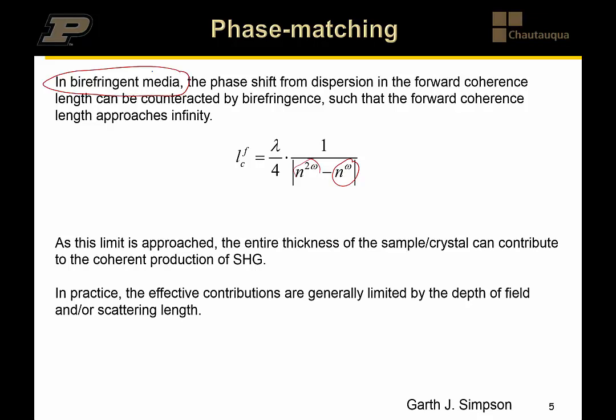So if you look along an optical axis it has a large refractive index for both 2 omega and omega and then compare that with another optical axis that has a smaller refractive index you might find a scenario where the fundamental at the high index axis is equal to the double refractive index on the low refractive index matched axis such that birefringence happens to be able to exactly counteract this dispersion effect. And in the limit of birefringence counteracting dispersion you end up with the denominator here approaching zero or the forward coherence length approaching infinity.